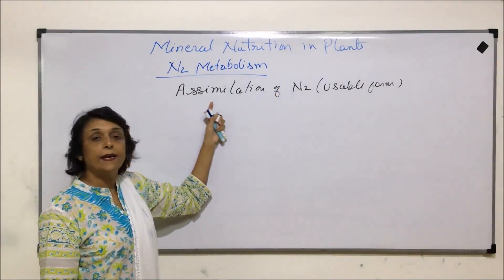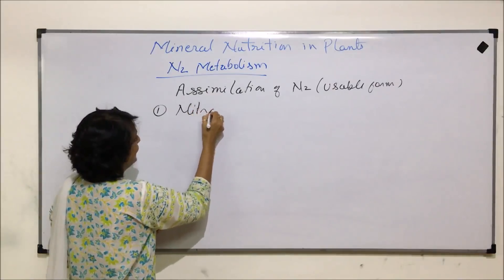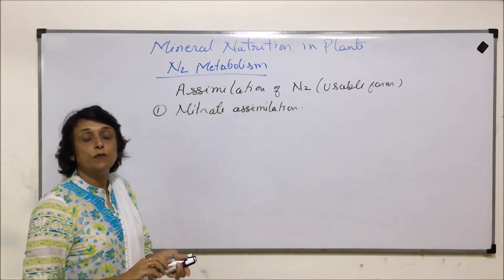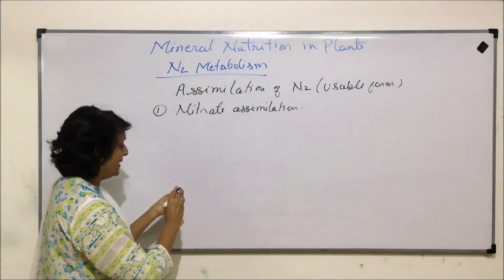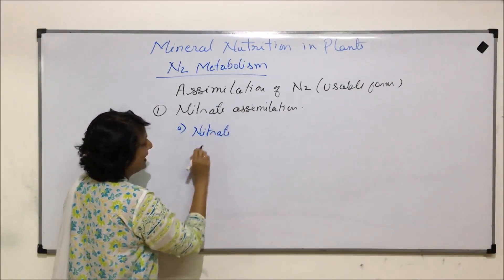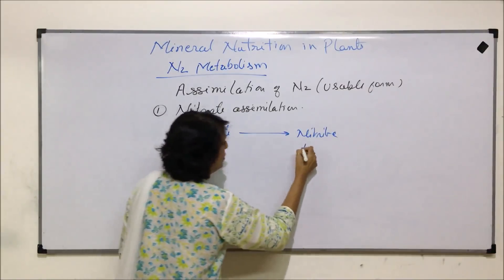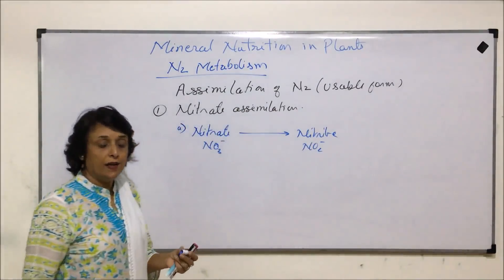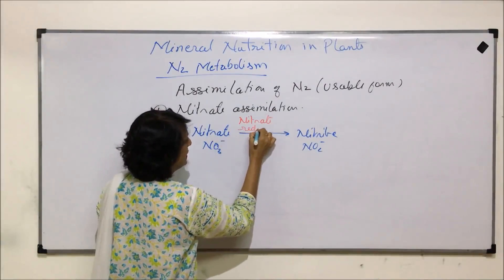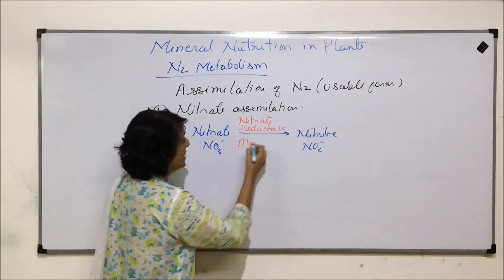We are talking about how nitrogen in all those usable forms is assimilated by the plant. Step number one is nitrate assimilation. The molecular nitrogen which was converted into nitrates has to be assimilated. This takes place in two sub-steps. First, nitrate is converted into nitrite - that is NO3 into NO2. The enzyme required here is known as nitrate reductase, which is a molybdenum-containing flavoprotein.